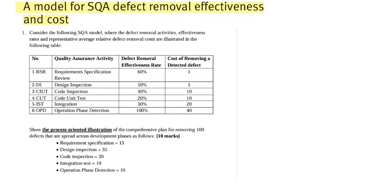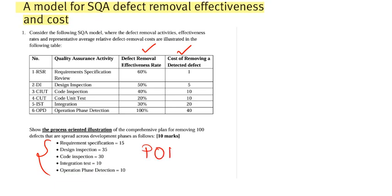The stages of development shown are: requirement specification, design inspection, code inspection, code unit test, integration, operation, and operation phase detection. When given such a table with the defect removal effectiveness rate and the cost of removing a detected defect, calculation becomes straightforward. We are also given data showing what we call the phase originated defects — the defects originating from a given stage, abbreviated as POD.